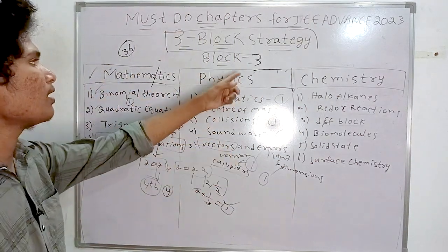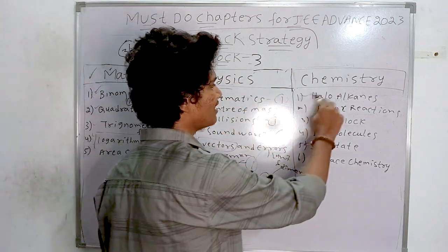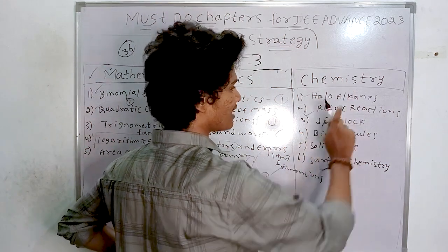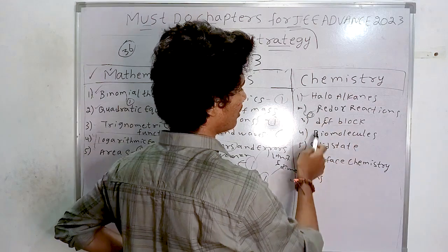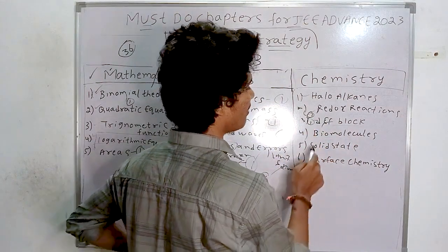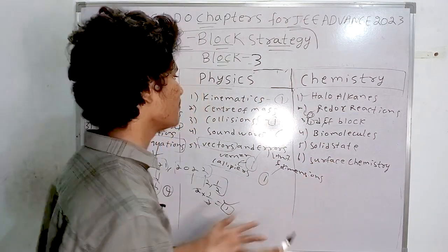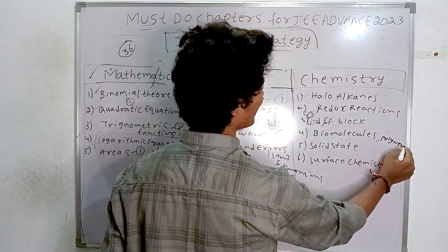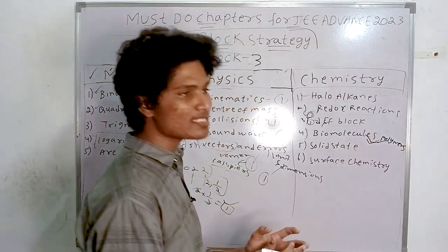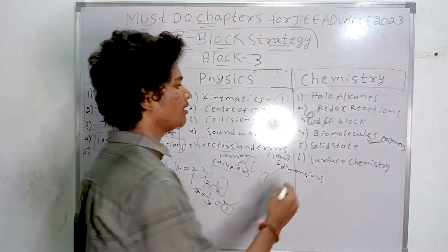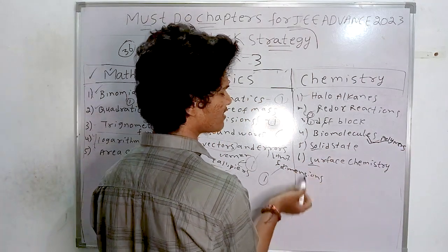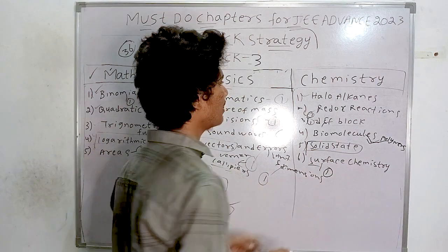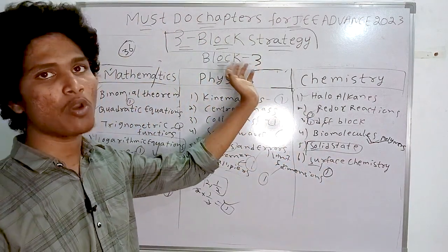Block three chemistry: haloalkanes — least important but possible; redox reactions — at least one question; D and F block and coordination compounds — one question definitely; biomolecules and polymers — matrix matching question in 2022; solid state and surface chemistry — surface chemistry one question received.